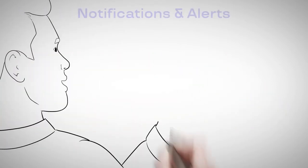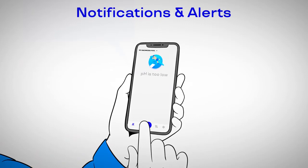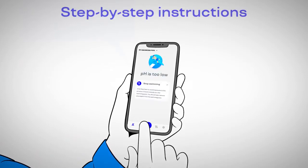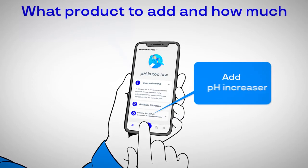When necessary, Blue Riot sends you a notification. It lets you know what the problem is and provides chemical recommendations and instructions, like what products to add and how much.